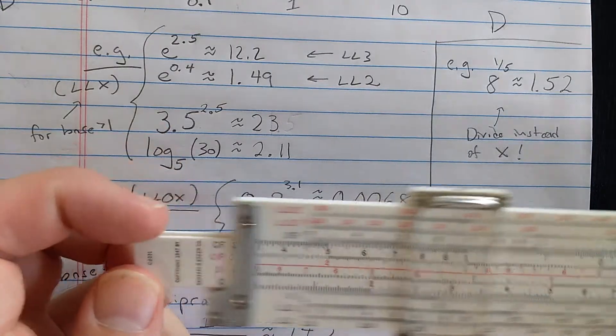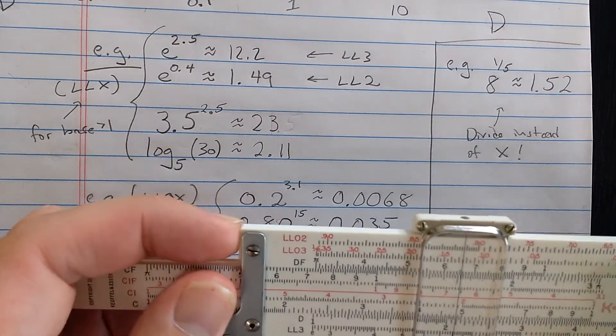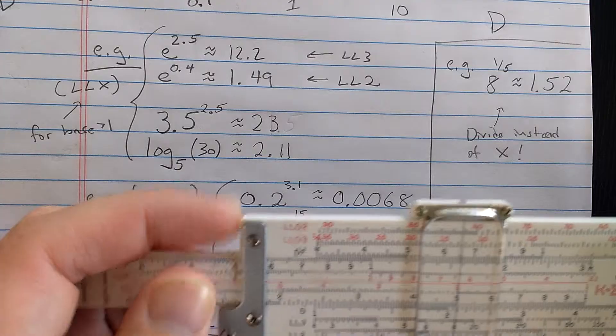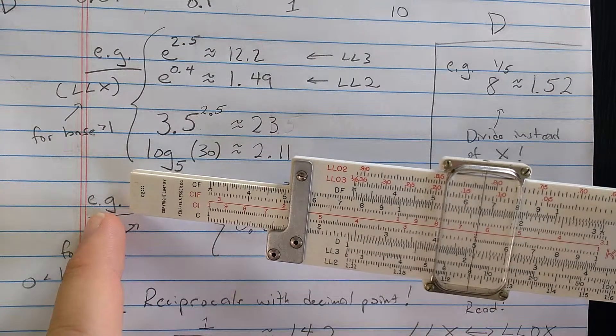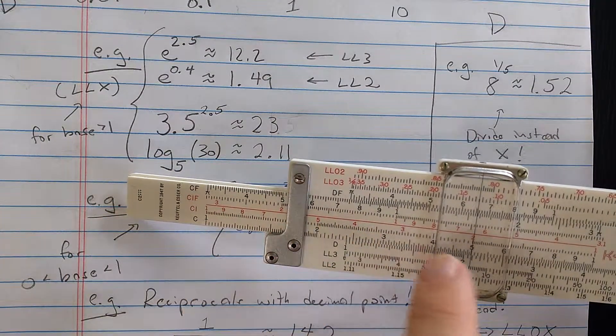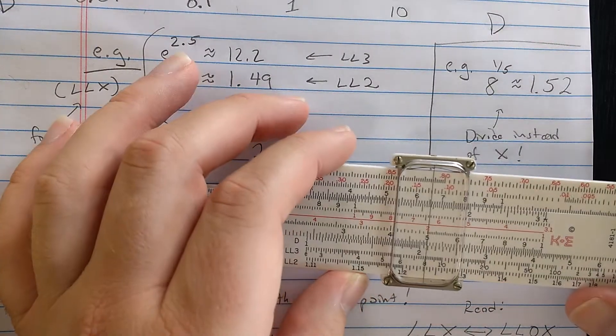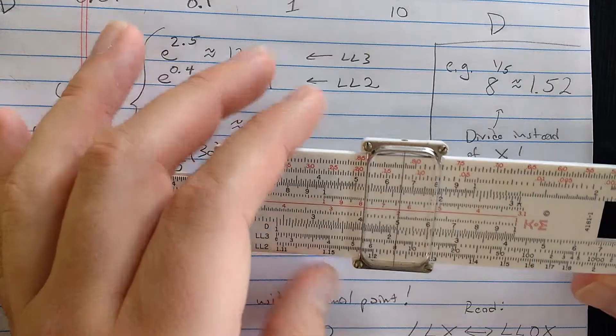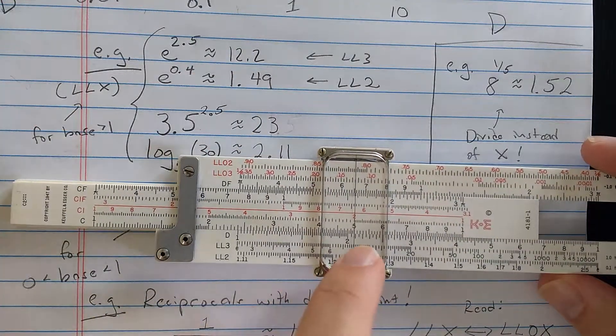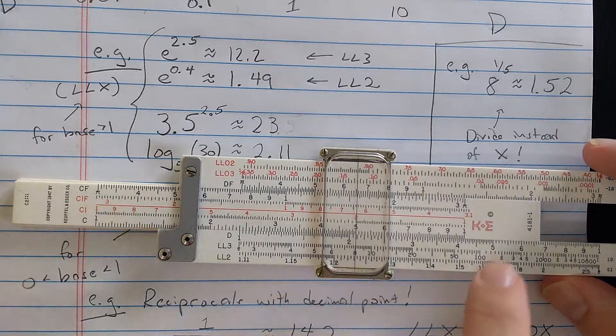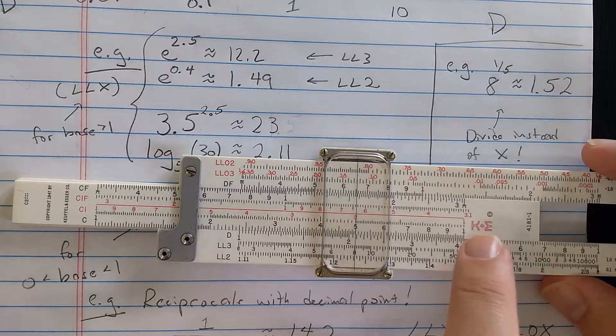Then I essentially want to move backwards. So something over here on the log-log scale to power 5, I want that to get me the 8. So it looks like I'm doing division, because that's essentially what I'm doing to the logarithm. Now the question is, where is that? Well, that's over here. But over here, remember,